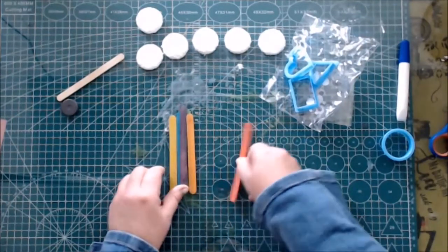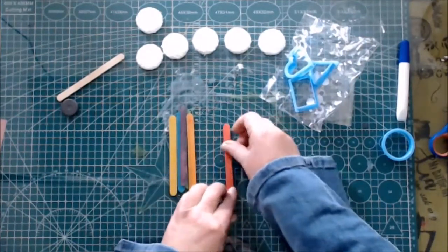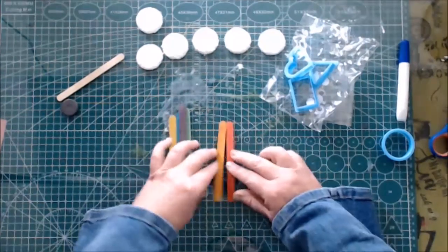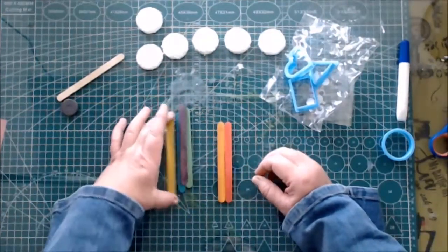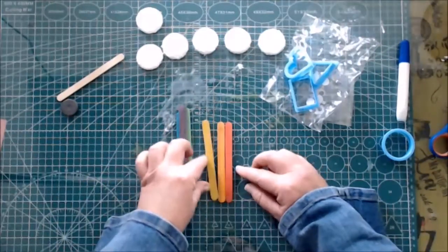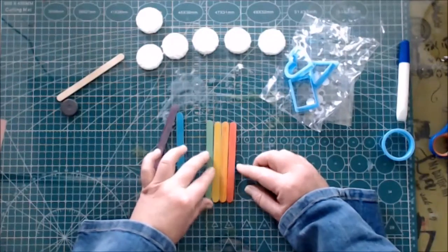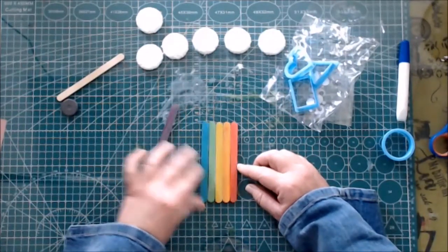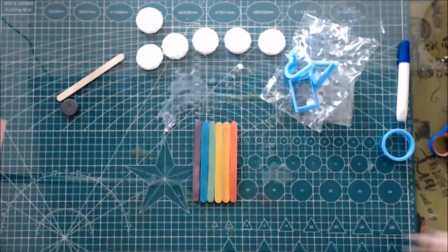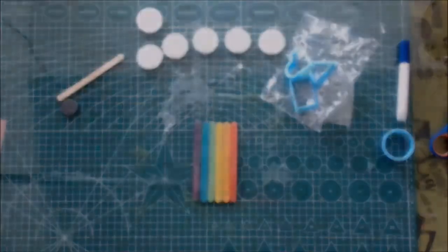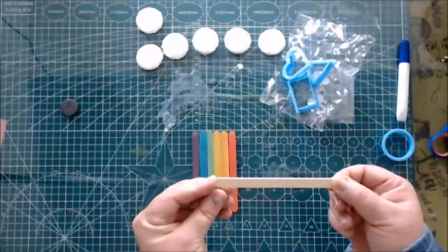Let's start with the red popsicle stick on the right hand side. Right next to it on the left, we put the orange popsicle stick, then the yellow one. Next to the yellow one on the left, we put the green one and then the blue one. Make sure that they are all in line next to each other.